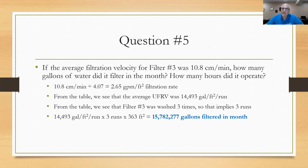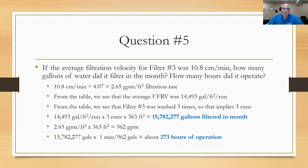For hours of operation: take 2.65 gallons per minute per square foot × 363 square feet = 962 gallons per minute average operating rate. Dividing the 15,782,277 gallons filtered by 962 gallons per minute gives approximately 273 hours of operation for filter number three in the month.